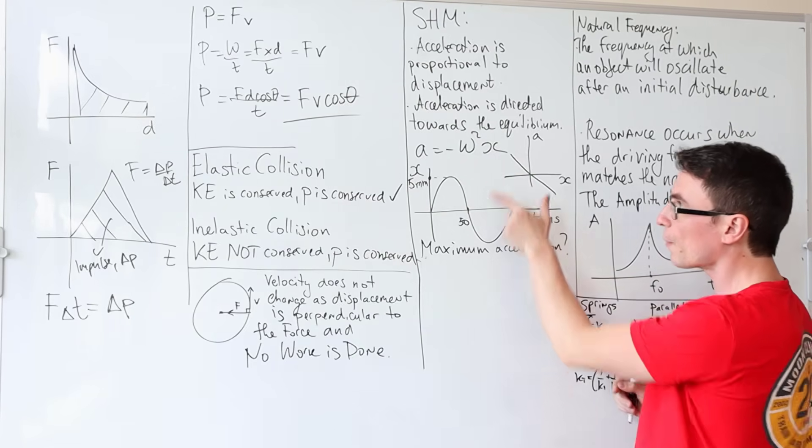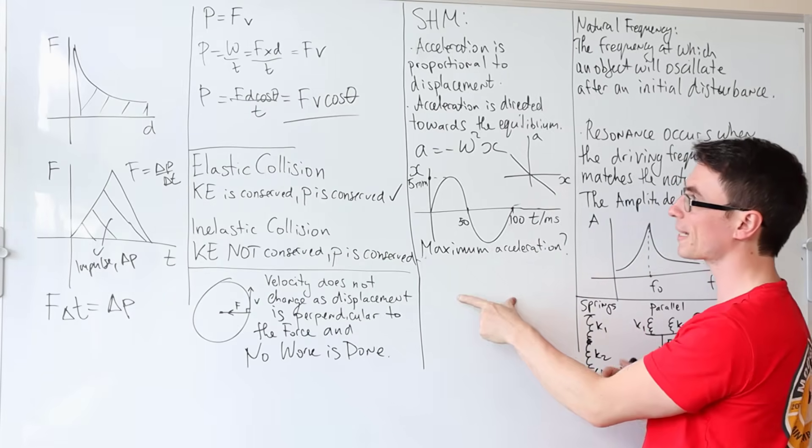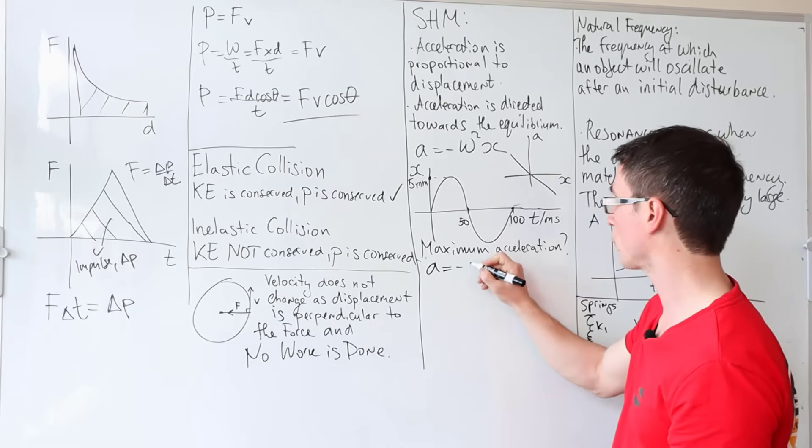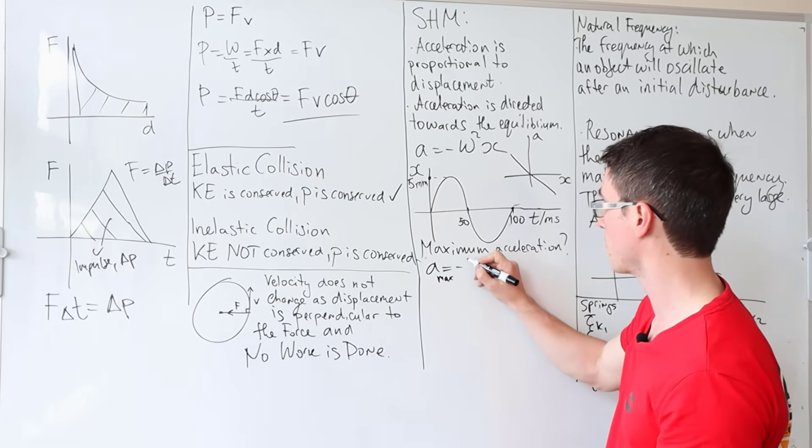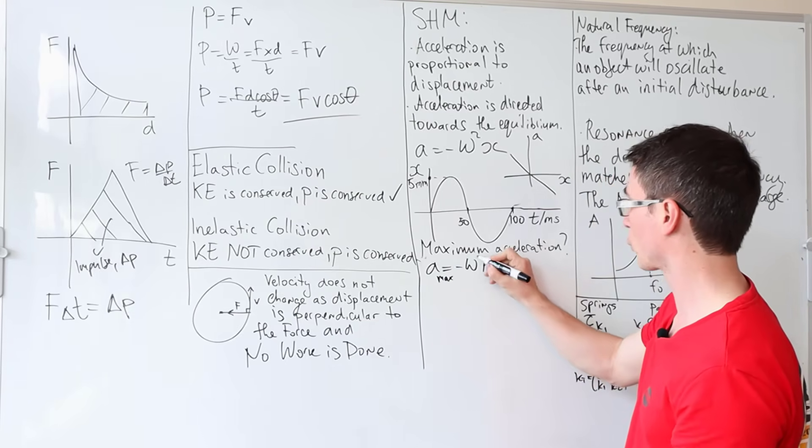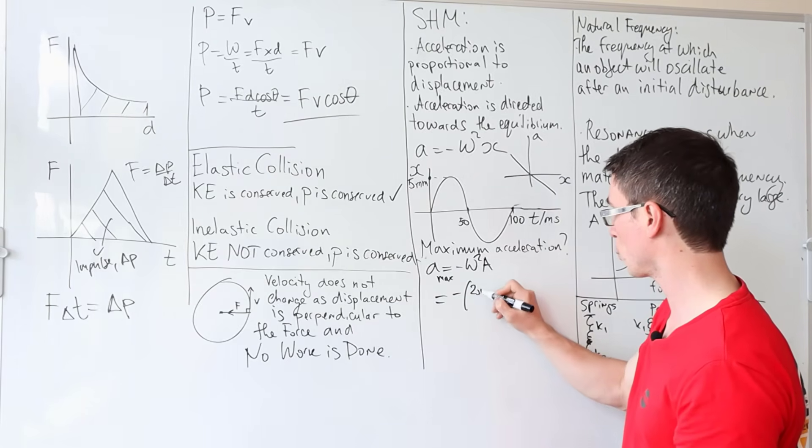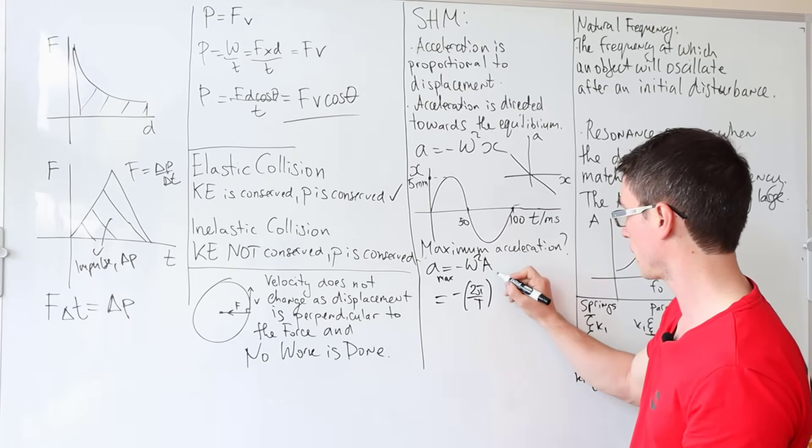Now, if ω is a constant, the maximum acceleration will occur at the amplitude. So a_max will be -ω² times the amplitude. This will be -2π over the time period.